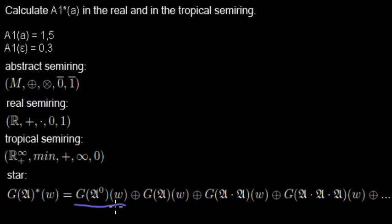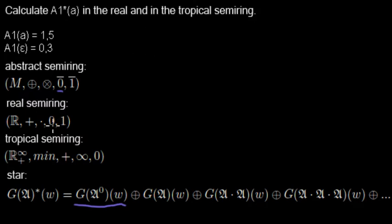By definition, the weight of epsilon is the neutral element. In this case it's zero. For the real semi-ring I need it in the first line, and for the tropical semi-ring the zero is at the second-last position.